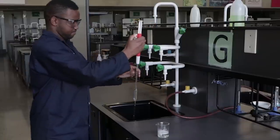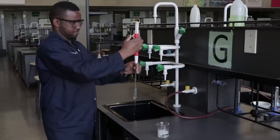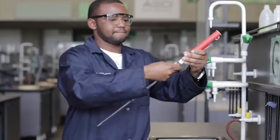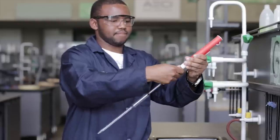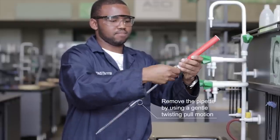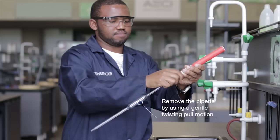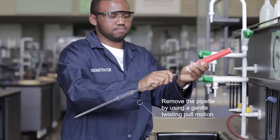The cleaning solution is then run out of the pipette into the sink. This procedure is repeated two more times. At this point, the pro pipette is removed by loosening the white end that was tightened earlier and the pipette is removed by using the twisting motion.